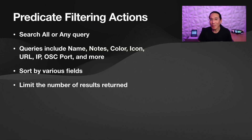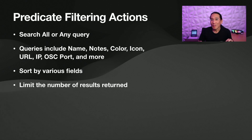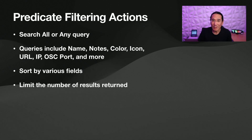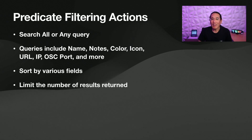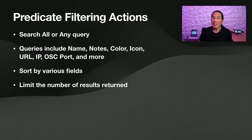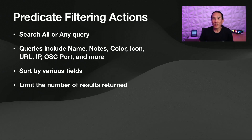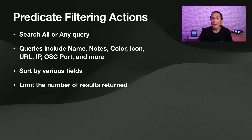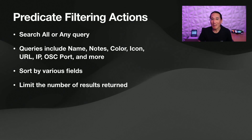You can use all or any logic. You can sort the returned values by various parameters, like sort by name. If you're looking at macros, you can sort by color or the notes field. And finally, you can also limit the number of search results returned. So if you only want to find five super source presets that begin with the word 'for', you can definitely do that.